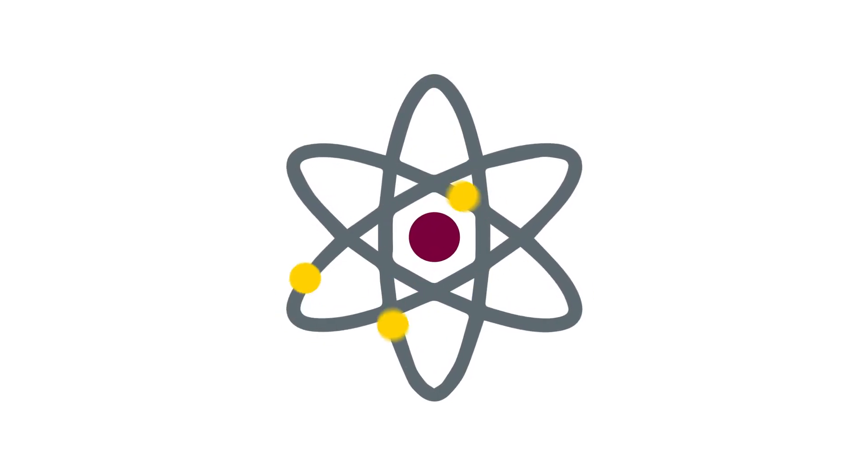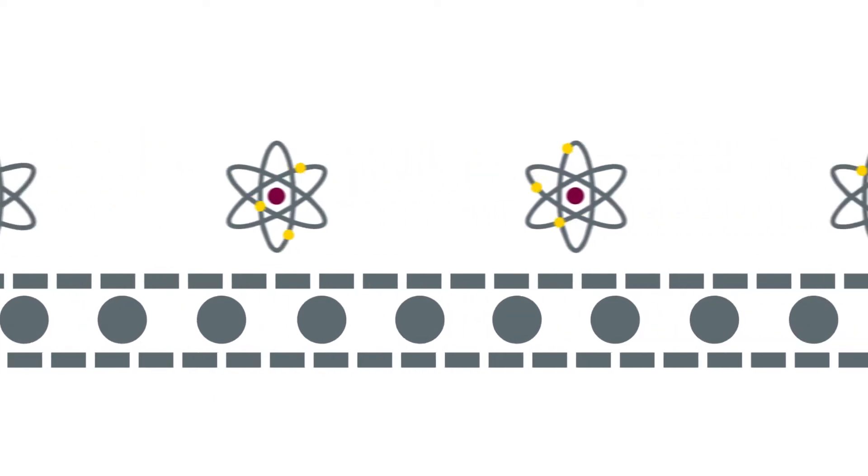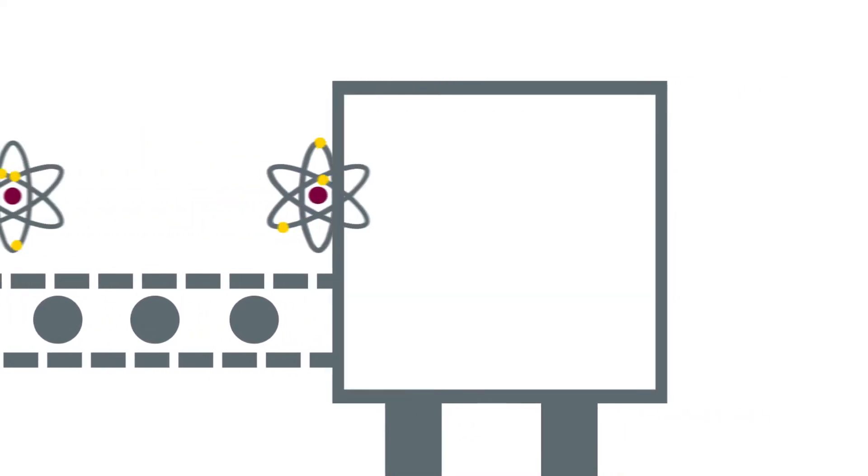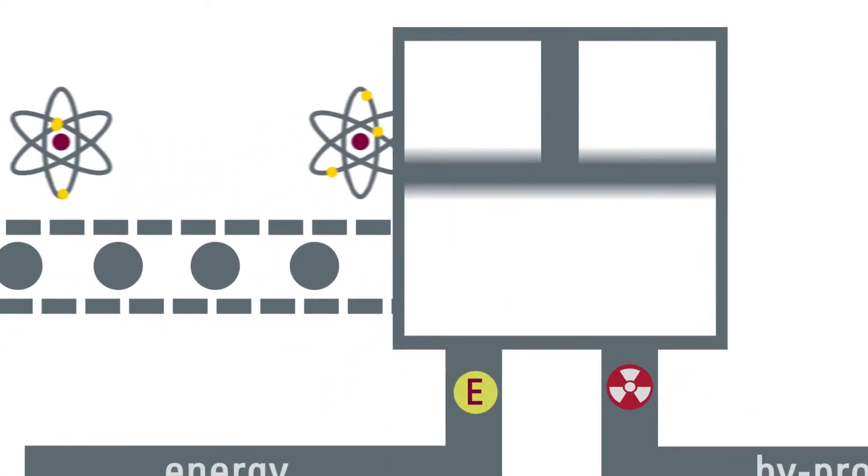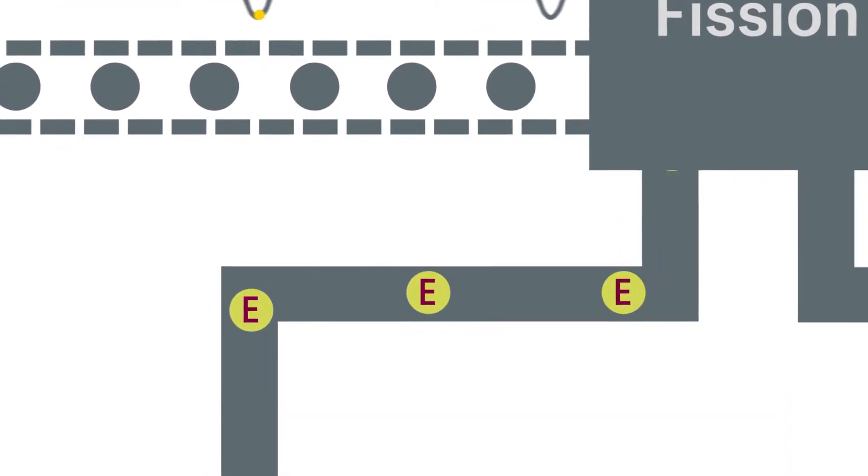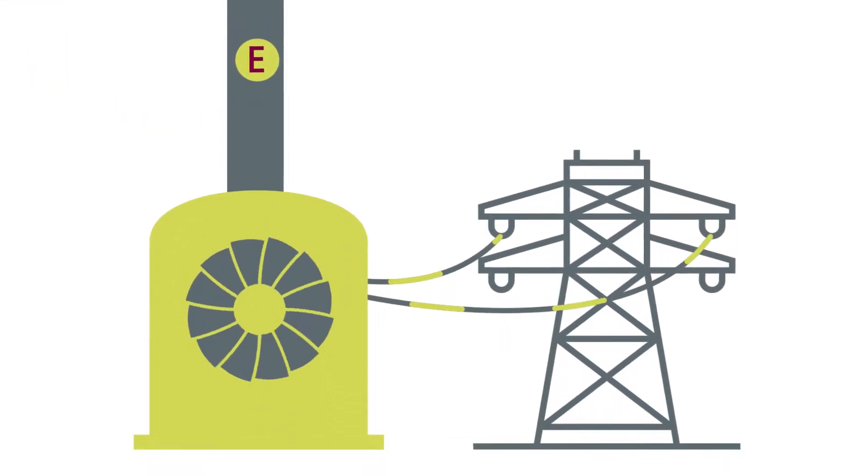Inside every atom is a vast store of energy. By breaking apart the atom's nucleus through a process called nuclear fission, we can release that energy. And with the right infrastructure in place, we can turn that energy into electricity.